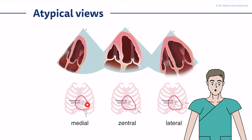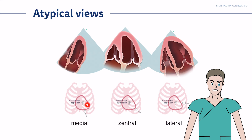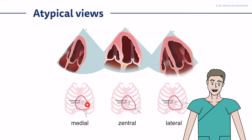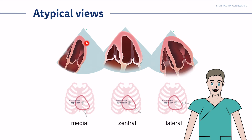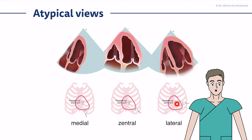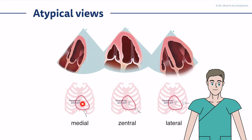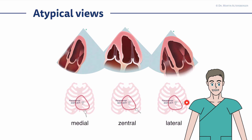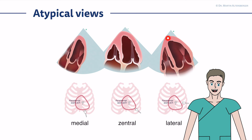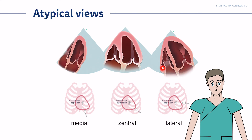I want to discuss some atypical views. Not always can you see everything with the four-chamber view optimally — then it is time to move the transducer. You can move medially so that you see the lateral parts of the left ventricle better, specifically the anterolateral wall. Here you have the traditional four-chamber view, and if you move more laterally and tilt inward, you get a nice glimpse of the right ventricular free wall.